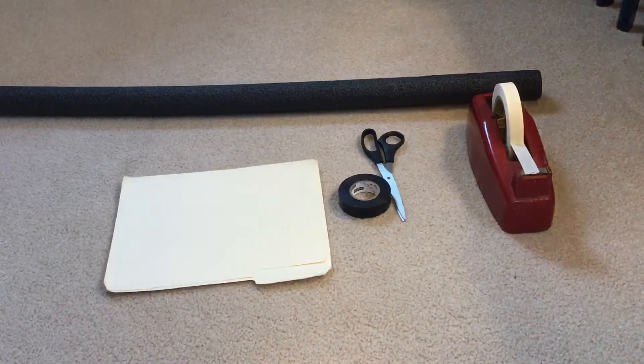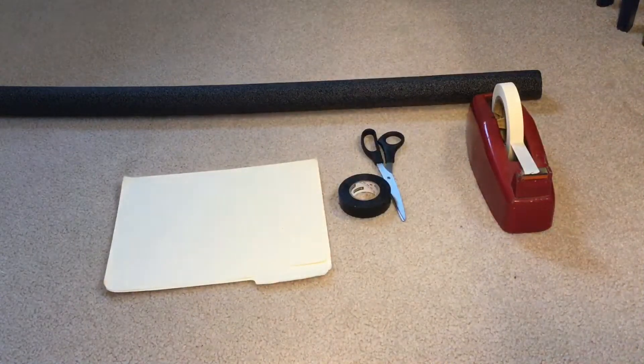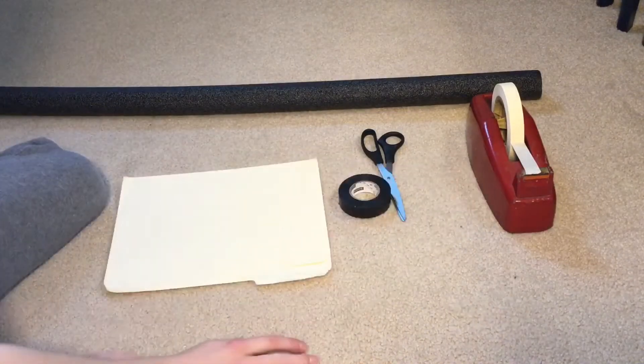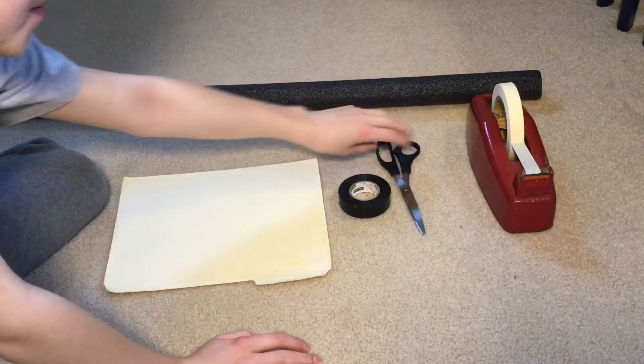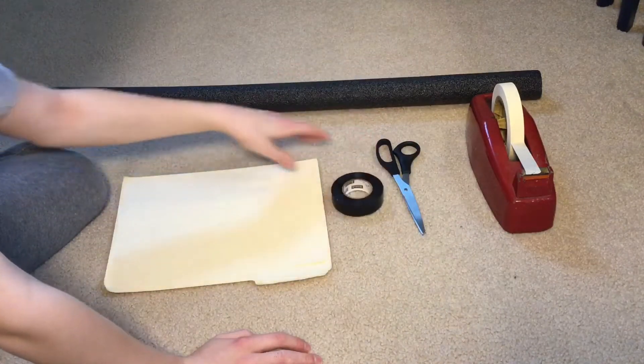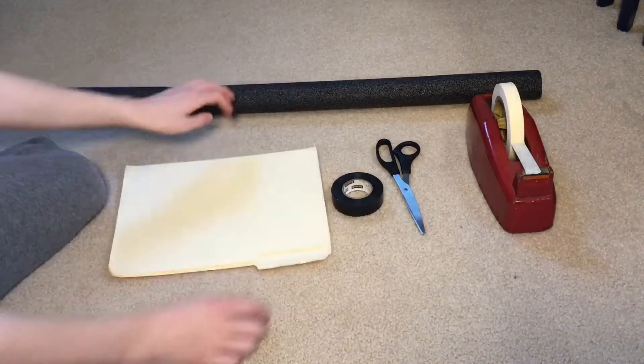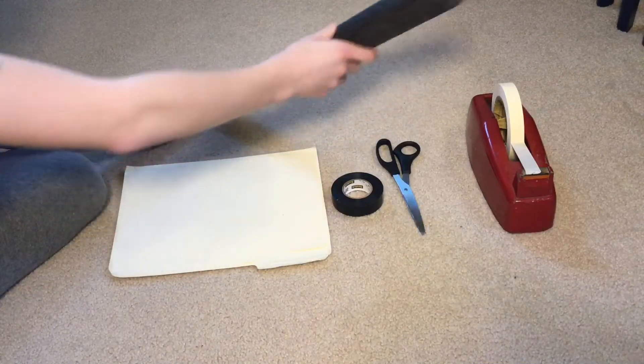Okay, these are the materials you're going to need. You're going to need some masking tape, we just have it on the roller, some scissors, some electrical tape, a vanilla folder, and a pool noodle or an insulator.